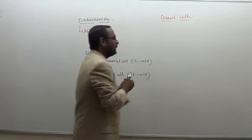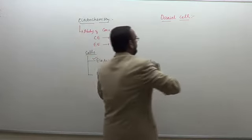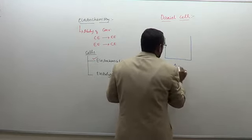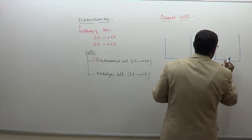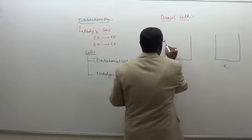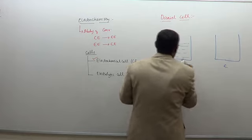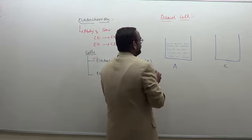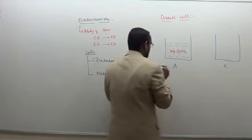The Daniel cell consists of two compartments: one is the anode compartment on the left hand side and the cathode compartment on the right hand side. In the anode compartment we have an electrolyte — aqueous zinc sulphate solution. So the anode compartment contains aqueous zinc sulphate solution.